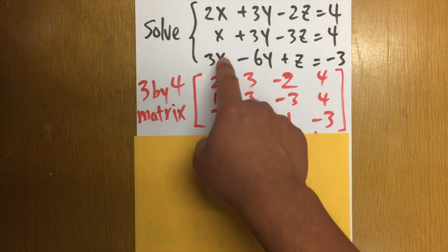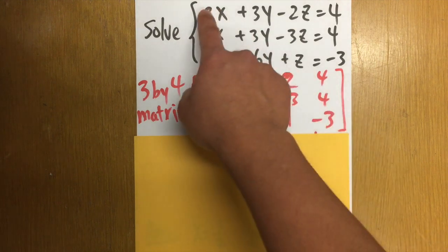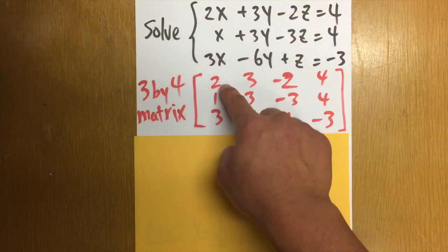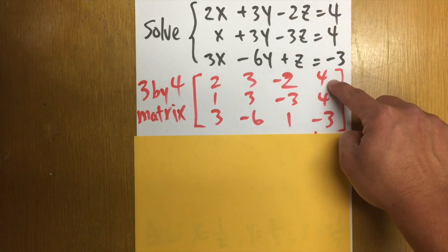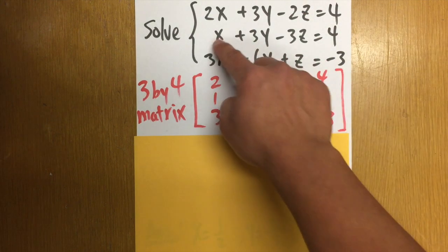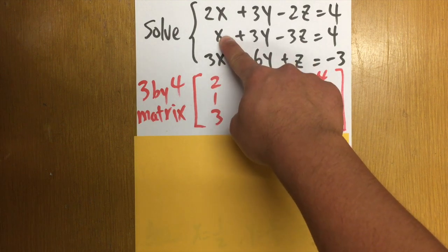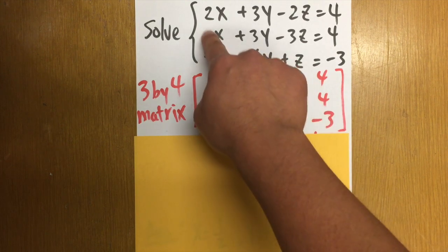So, for example, the first row, these are just the numbers right here. We have the 2 here, 3, negative 2, and 4. And then for the second row, we will have 1, because that's the coefficient in front of the x. The number in front of the x is 1.